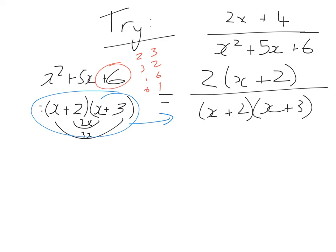And again, thankfully, we notice that the x plus 2s can cancel or can divide into each other to give us 1. So therefore, we're left with 2 over x plus 3. And that's our answer.